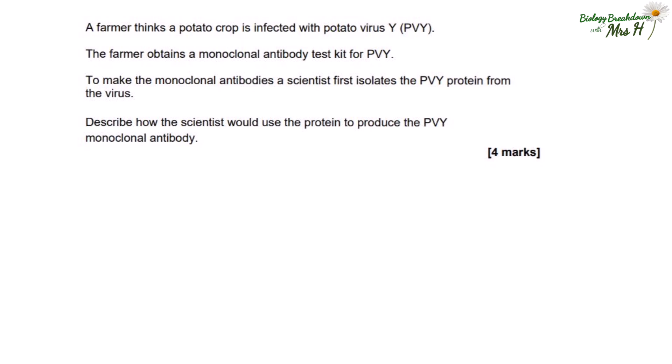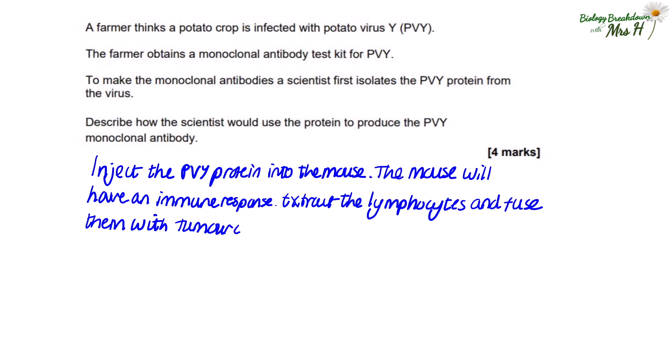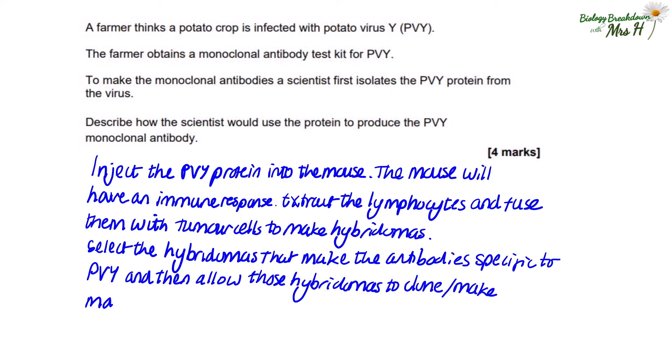A farmer thinks a potato crop is infected with potato virus Y (PVY). The farmer obtains a monoclonal antibody test kit for PVY. To make monoclonal antibodies a scientist first isolates the PVY protein from the virus. Describe how the scientist would use the protein to produce the PVY monoclonal antibody. All we need to do here is apply what we already know about making monoclonal antibodies and use PVY as the antigen: inject the PVY protein into the mouse, the mouse will have an immune response, extract the lymphocytes and fuse them with tumour cells to make hybridomas, select the hybridomas that make the antibody specific to PVY, and then allow those hybridomas to clone and make many copies of themselves.